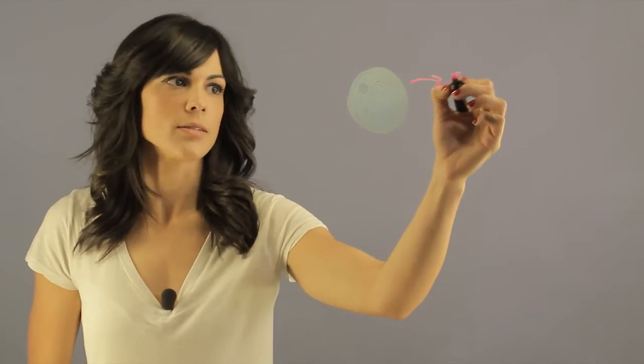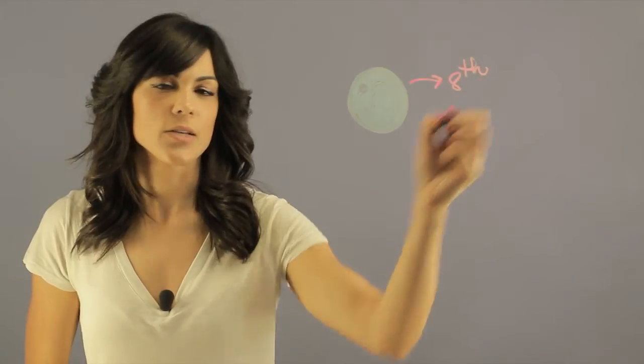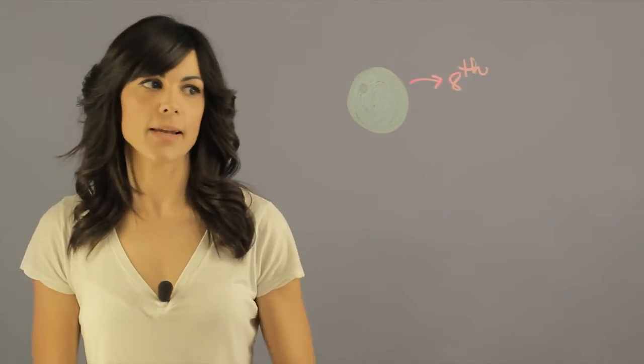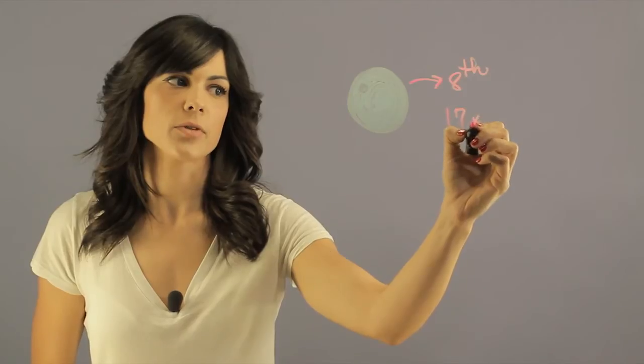So Neptune is the last planet from the Sun. It's our eighth planet. It's our third most massive planet, about 17 times the mass of the Earth.